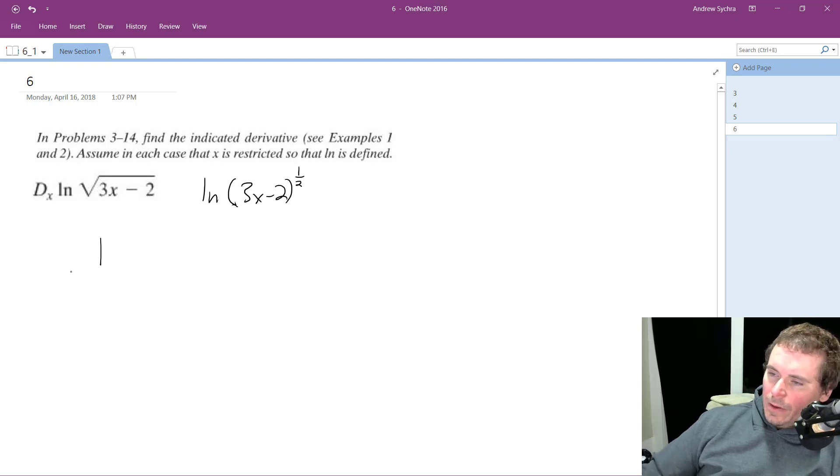So the derivative of this is going to be 1 over 3x minus 2 raised to the 1 half.